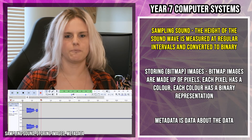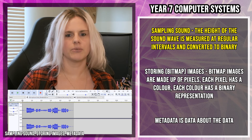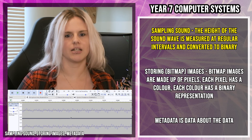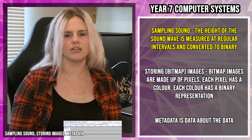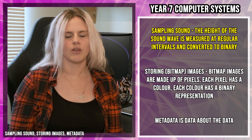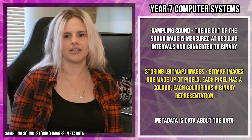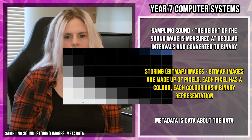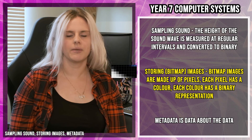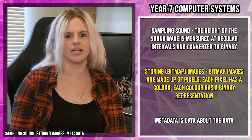Every single thing on a computer is stored as binary — binary is zeros and ones. When we're listening to sound on our computer, the computer can't hear the sound itself; it's actually processing lots of zeros and ones really quickly. When you record sound on a computer, the height of the sound wave is measured at regular intervals and this is then converted to binary. When the computer processes the binary, we hear the sound. It's very similar for storing bitmap images — bitmap images are made up of pixels. Each pixel has its own colour and each colour has its own binary representation. The computer saves all these binary representations, and when you click on your picture to open it up, it puts all the binary together and you see the image, but the computer only processes zeros and ones — it can't actually see the picture.